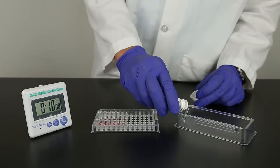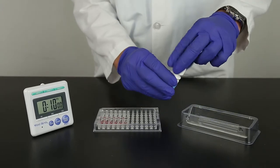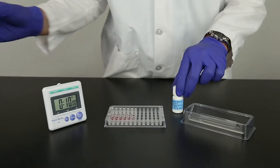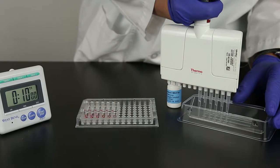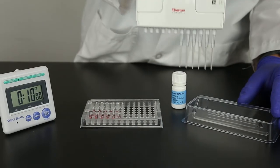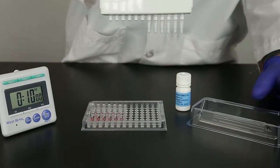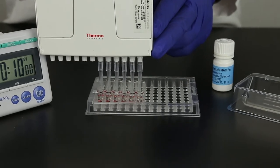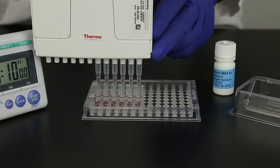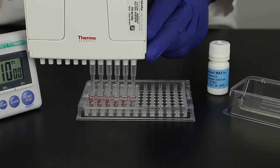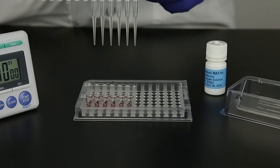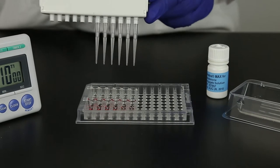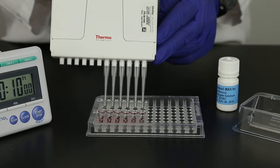Pour the needed amount of conjugate into a clean reagent boat. Using the 12 channel pipetter, prime and pipette 100 microliters of conjugate into each red marked well. Check to be sure there are no air bubbles and the tip is fully loaded. Mix the conjugate and samples in the red marked wells by carefully pipetting up and down five times. Draw up 100 microliters making sure no bubbles are present in any of the tips. Transfer 100 microliters of sample into the clear antibody wells.